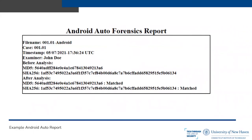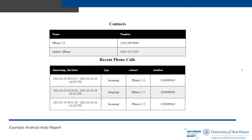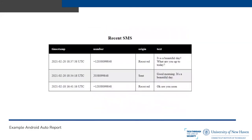The Android Auto forensics report has the same header format as the Apple CarPlay report, except the file name indicates Android. For voice commands, no API is needed since Android Assistant commands are stored as text rather than audio files — so messages can be extracted directly, along with whether they originated in the car. The report also includes vehicle pairings with vehicle ID, last connection timestamp, and Bluetooth address, as well as contacts, recent phone calls, and text messages.